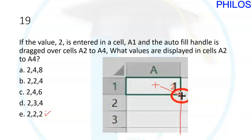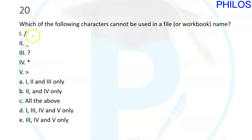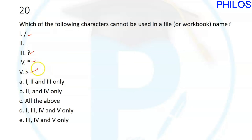Question twenty: which of the following characters cannot be used in a file or workbook name? You can use an underscore and certain other characters, but not all. The ones that can be used are options I, II, III, IV, and V only. The correct answer to question twenty is D.